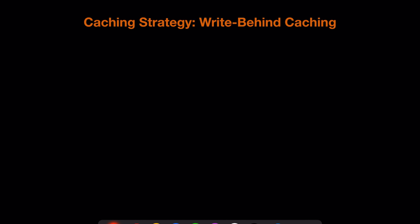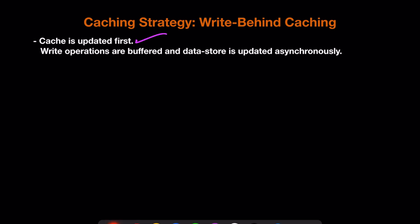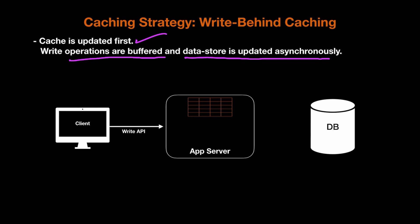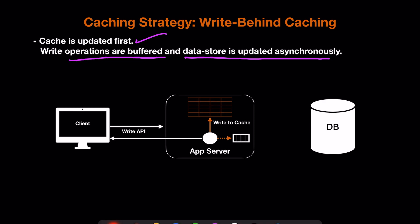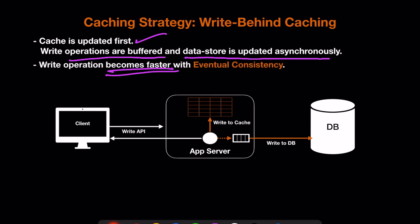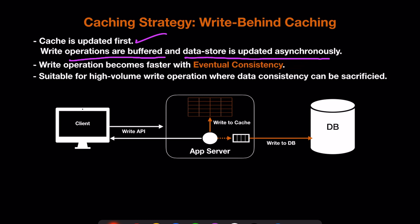The next strategy is write-behind caching. The cache is updated first, then write operations are buffered and the data store is updated asynchronously later. When a client calls the write API, the app server writes to the cache, buffers the database operations in memory, and immediately sends the response back to the customer — without updating the database in the same call. The DB update happens asynchronously in a separate process. This makes write operations faster compared to write-through, but data is only eventually consistent rather than strongly consistent.